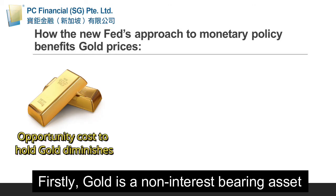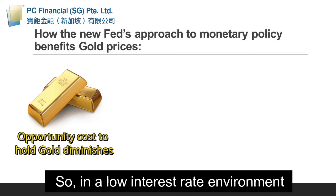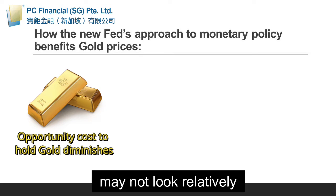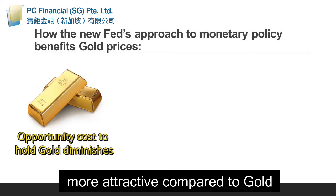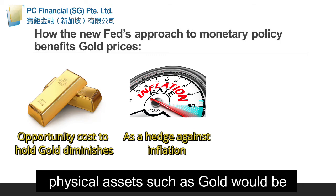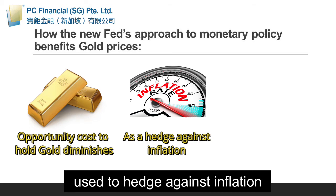Firstly, gold is a non-interest-bearing asset. So in a low interest rate environment, alternatives such as interest-bearing assets may not look relatively more attractive compared to gold. Secondly, even if inflation rises above 2%, physical assets such as gold would be used to hedge against inflation.